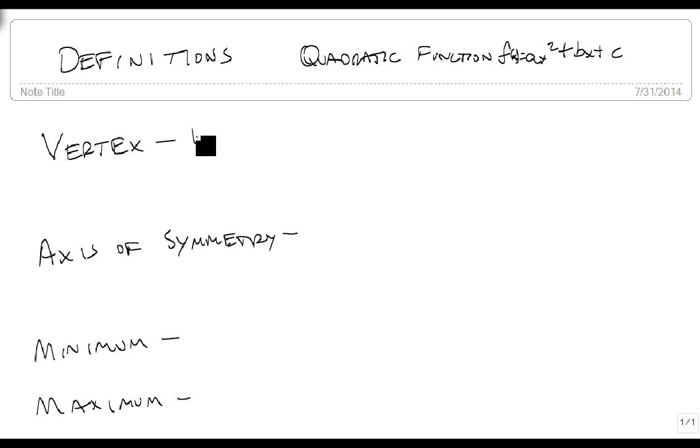And the vertex, by definition, is the highest or lowest point on the graph.